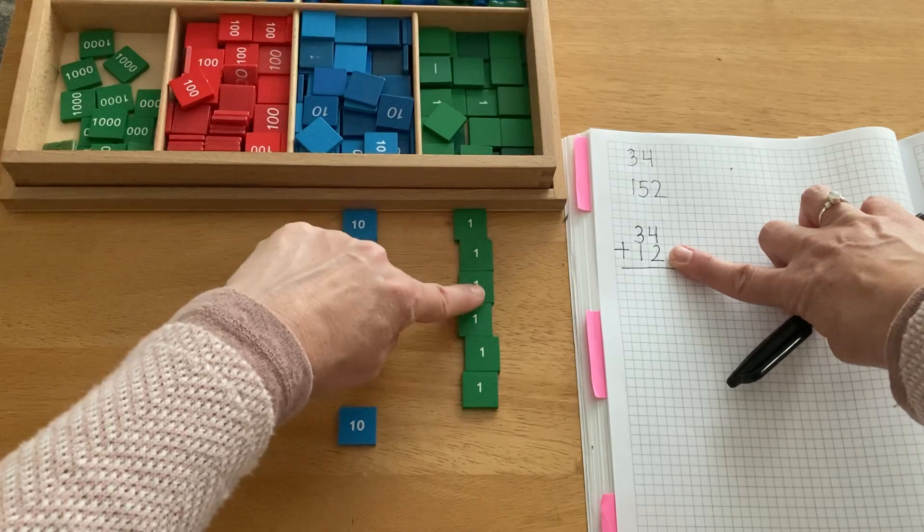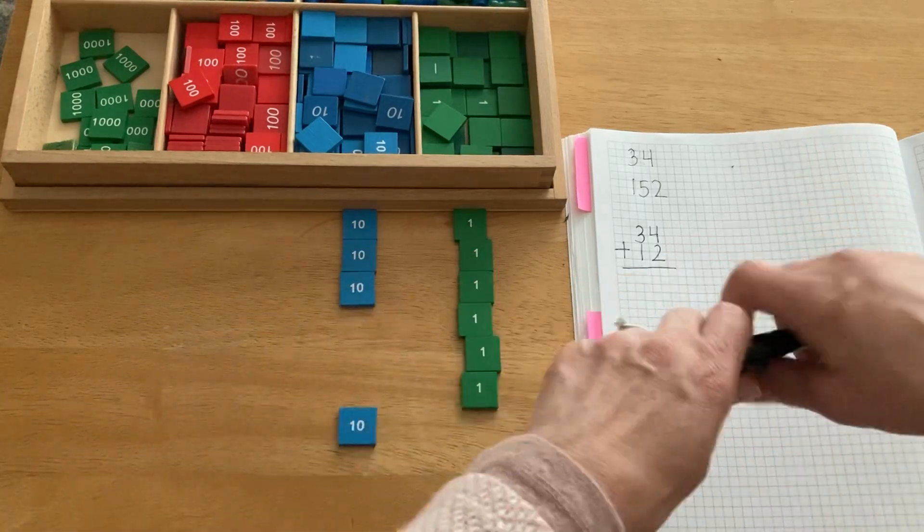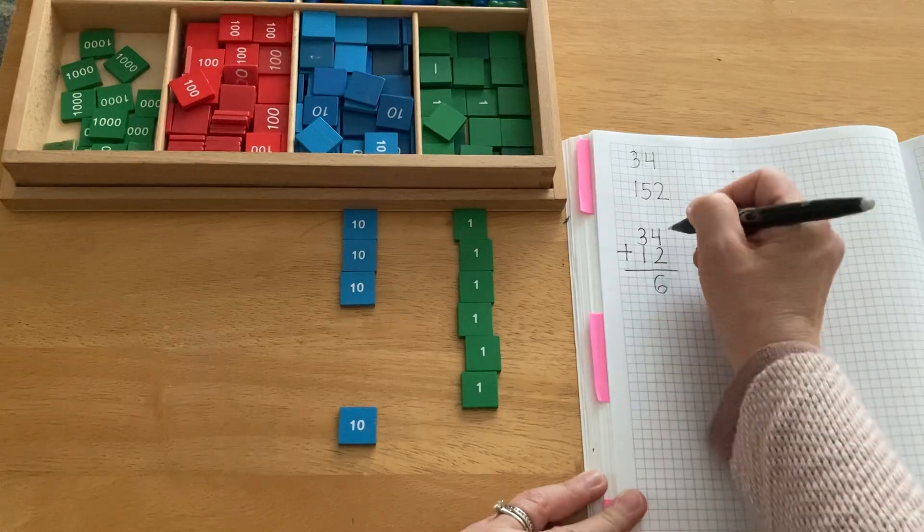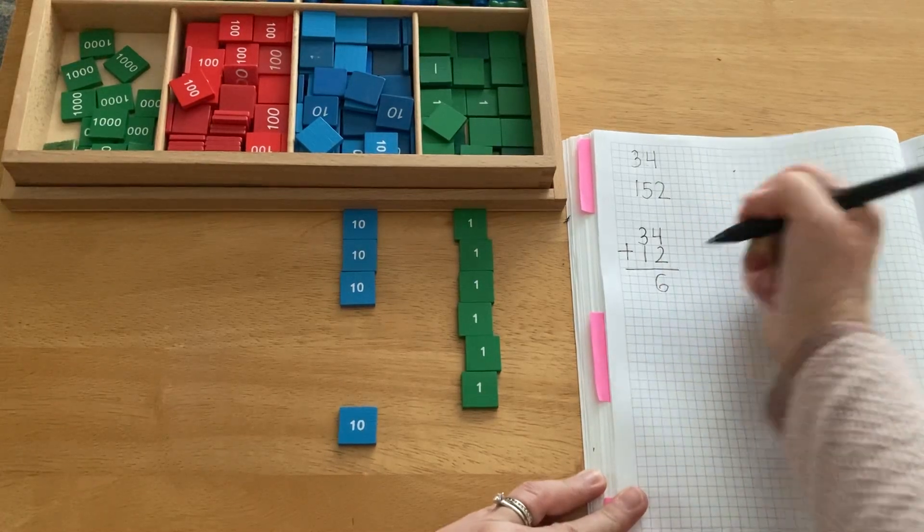Let's add all the 1s together. 1, 2, 3, 4, 5, 6. 6 of them. So we said 4 plus 2 is 6.